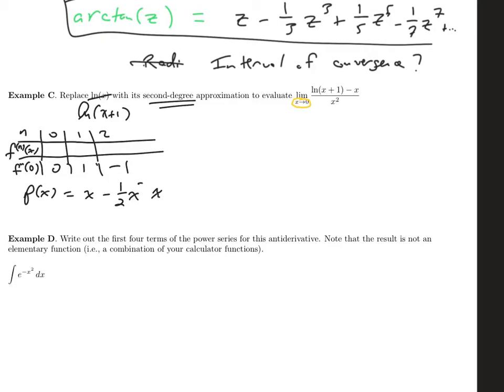So the idea here is that this is approximately the same as log of x plus one. And when I say approximately, I mean approximately as x is approximately zero. And what I mean by that is that the closer x gets to zero, the more log of x plus one looks like x minus a half x squared.